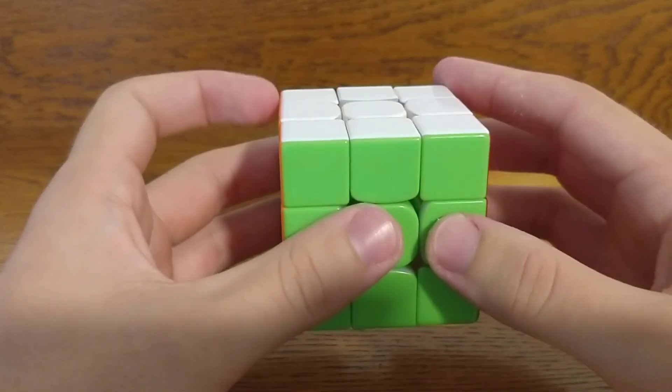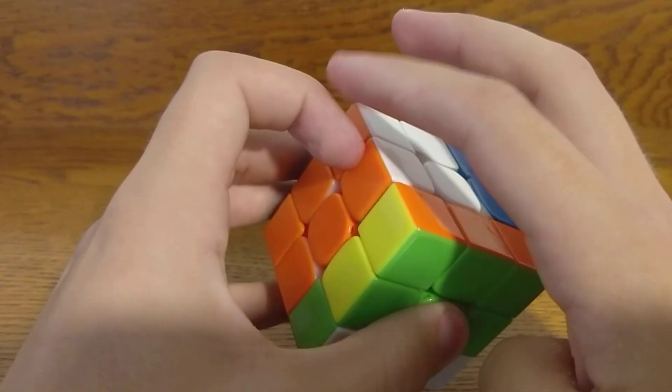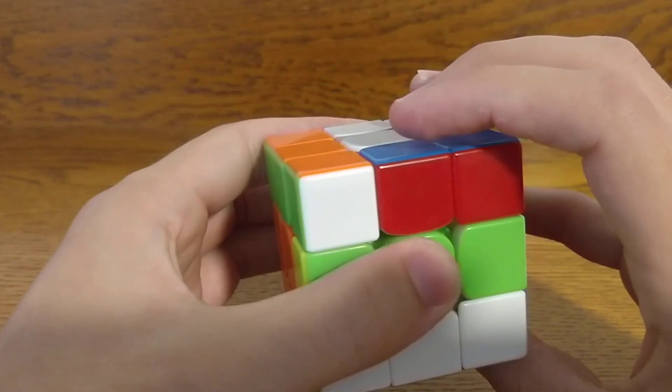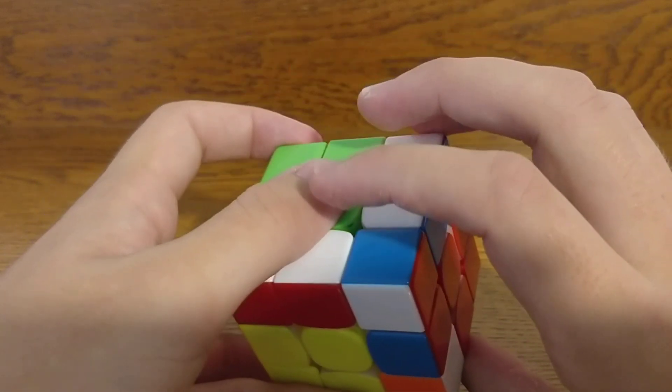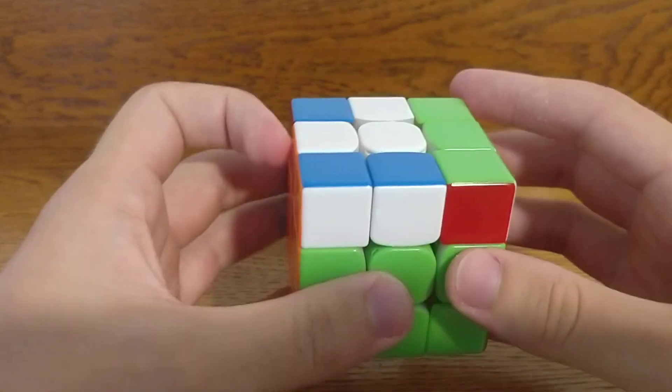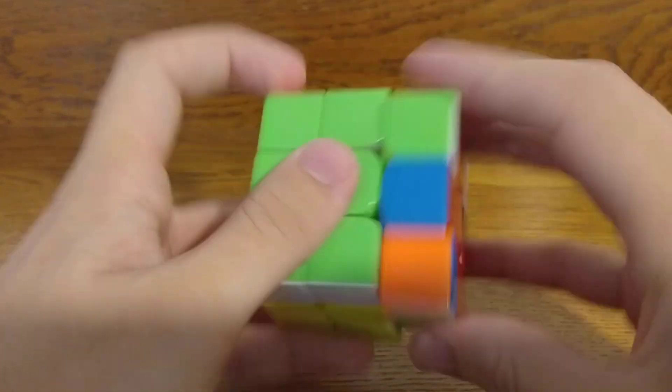You can see my finger tricks there, but the important ones to note are this first u, you do it with your left index like that, and this first f' you do it with your left index again like that. Apart from that it's pretty standard, so it looks like that.